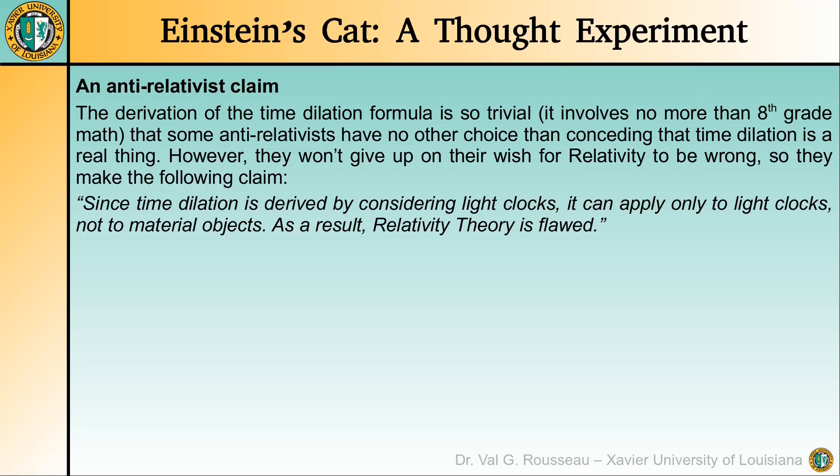The derivation of the time dilation formula is so simple, as it involves no more than 8th grade math, that some anti-relativists crumble under the overwhelming evidence and reluctantly concede that time dilation is a real thing. However, they refuse to give up on their wish for relativity to be wrong, so they claim, without any substantial proof, that time dilation applies only to light clocks and not to material objects, and that, as a result, relativity is supposedly flawed.